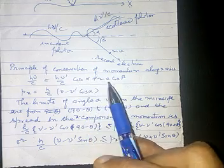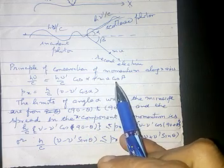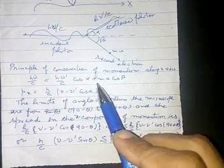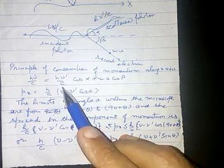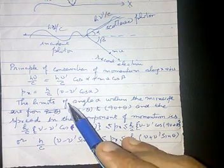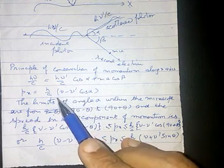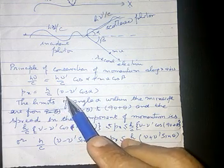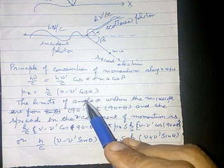So px equals mv cos beta equals h nu upon c minus h nu dash upon c cos alpha. Therefore px finally will be h upon c into nu minus nu dash cos alpha.